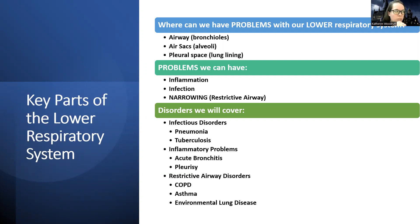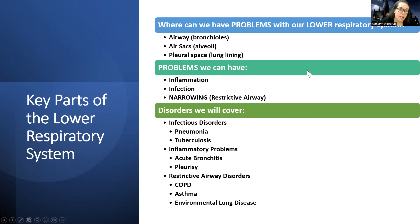Now we're getting into the lower respiratory system. The diseases we're going to cover include things that affect our airway, our air sacs where gas exchange occurs — where we get oxygen in and carbon dioxide out — and our pleural space. Problems in these areas can involve inflammation, infection, and narrowing or restrictive airway in our actual airways.